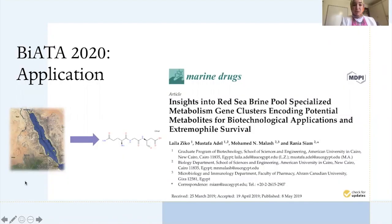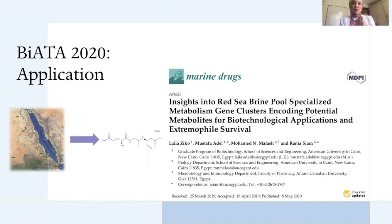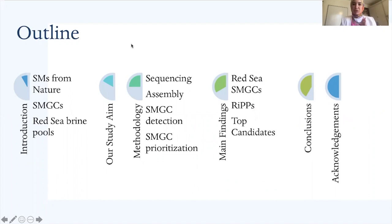Since BAI AIDA 2020 is about bioinformatics from algorithms to applications, our project was about applying bioinformatic algorithms to find new small molecules or specialized metabolites in their clusters. So it is a form of an application. I'm going to give a brief intro about the elements of the project, talk about our aim, our methodology, our main findings, and a conclusion.